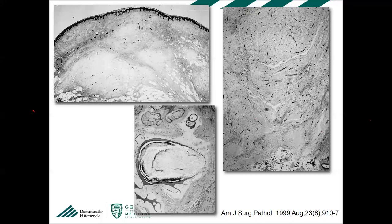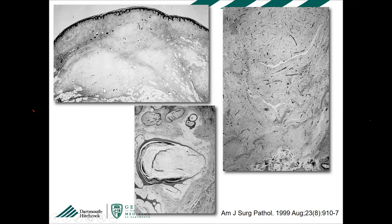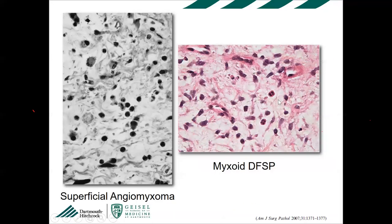A difficult differential for myxoid DFSP, especially on superficial biopsy, is superficial angiomyxoma — which can occur in Carney syndrome or sporadically. Superficial angiomyxoma typically has rounded edges at the tumor margins and can entrap adnexal structures, whereas DFSP does not entrap adnexal structures — a helpful clue. Neutrophils can be seen in about 30% of myxoid DFSP, so not an absolute differentiator. Both can be CD34 positive, so CD34 is not helpful in this differential.